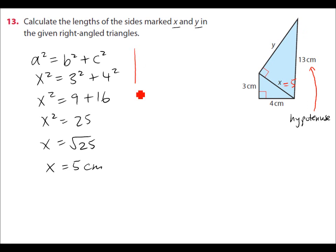So we'll write down Pythagoras' theorem again. A squared is equal to b squared plus c squared. Now the large side is 13. So 13 squared should equal y squared plus 5 squared. Now 13 squared is 169. That equals y squared plus 5 squared is 25.